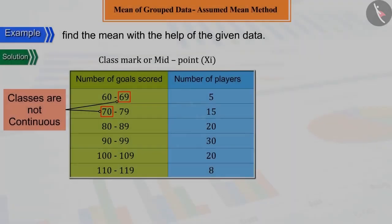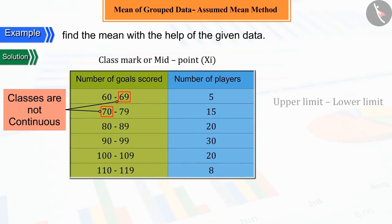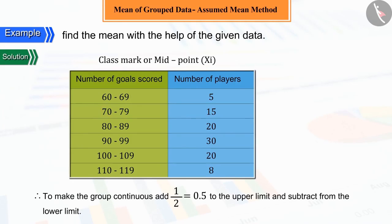Well done! We can see from the table that the difference between upper and lower limits is 1. So, to make the class continuous, let's add half, that is 0.5, in the upper limit and subtract the same from the lower limit.